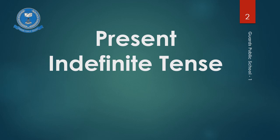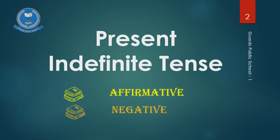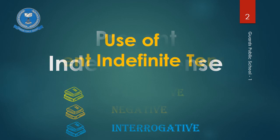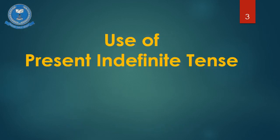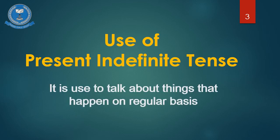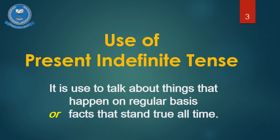Today, we are going to learn about present indefinite tense, forming the sentences in affirmative, negative and interrogative forms. Present indefinite tense is used to talk about things that happen on a regular basis or facts that stand true all the time.